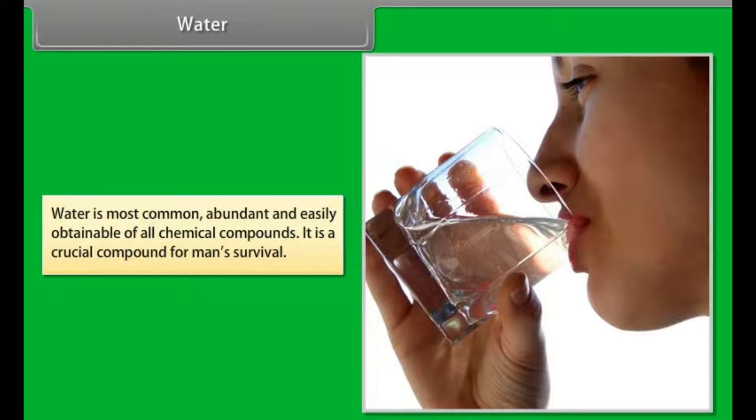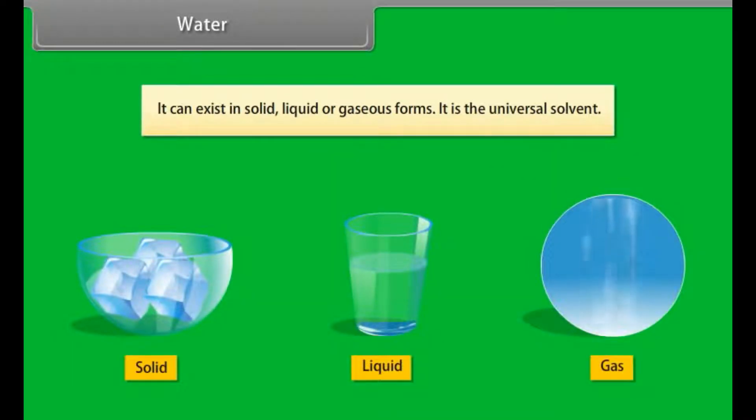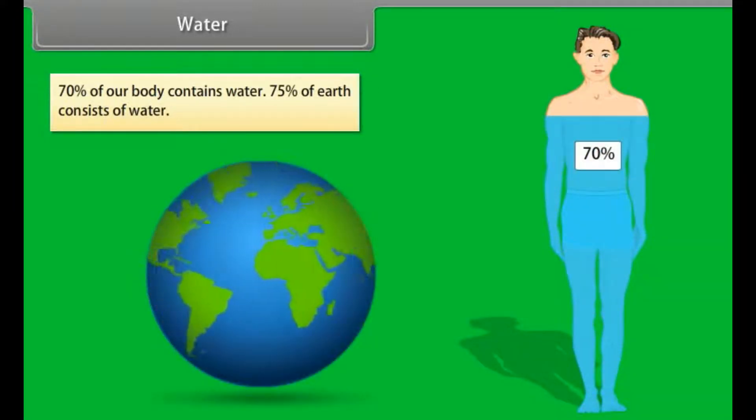Water is most common, abundant, and easily obtainable of all chemical compounds. It is a crucial compound for man's survival. It can exist in solid, liquid, or gaseous forms. It is the universal solvent. 70% of our body contains water and 75% of Earth consists of water.